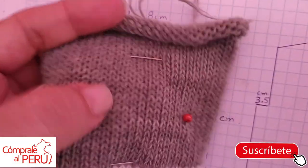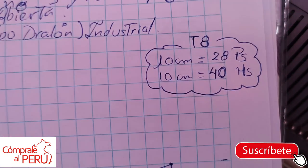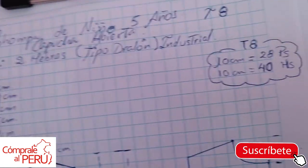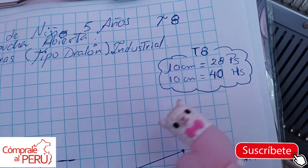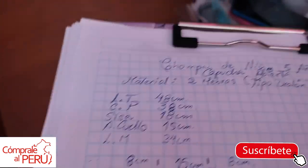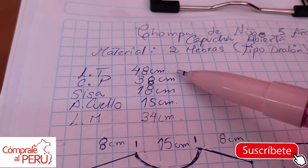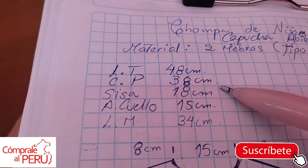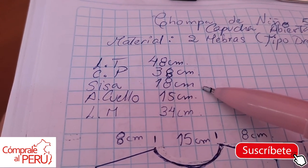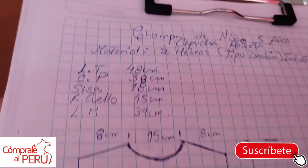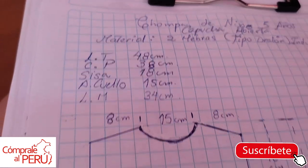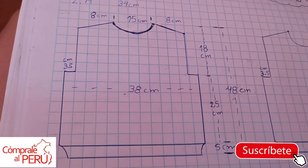I have counted the stitches and rows. In 5 cm I have 14 stitches, so in 10 cm I have 28 stitches. In 5 cm I have 20 rows, which means in 10 cm I have 40 rows. Since I don't have a size 5 template, I used my size 4 template. The total length is 48 cm, chest circumference 38, armhole 18, neck width 15, sleeve length 34. What I have done is convert this into a schematic.